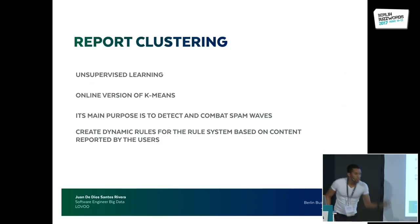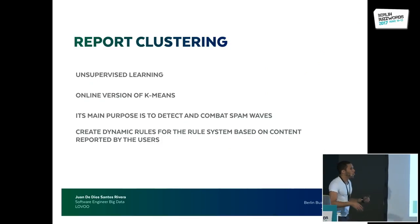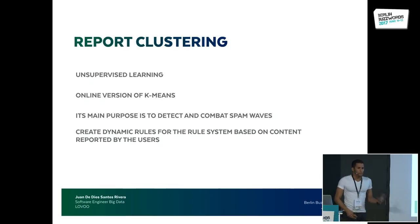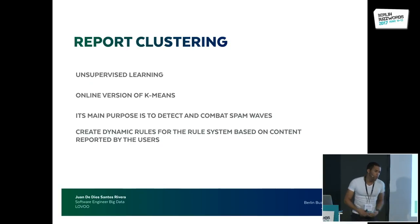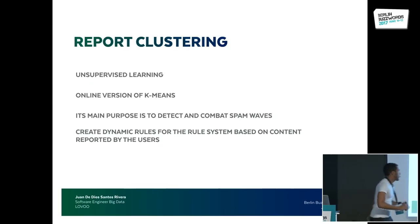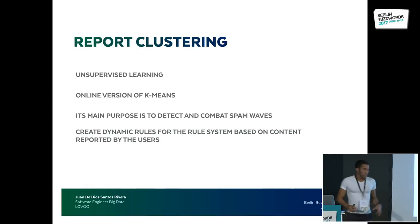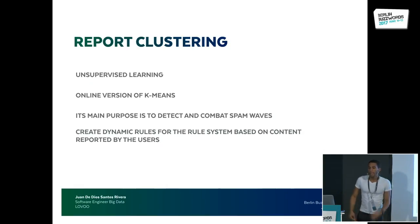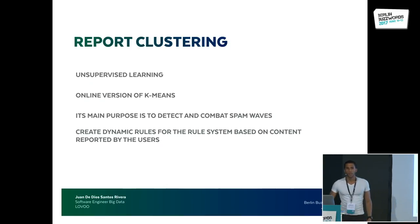The next component is report clustering. Unlike the first one, it features an unsupervised learning approach and uses a homemade online version of K-means. The main difference from traditional K-means is that it's online — we're always learning on the go. We learn, we predict, we learn, we predict. The purpose is to detect and combat spam waves by creating dynamic rules for the rule system, based on content being reported by users.